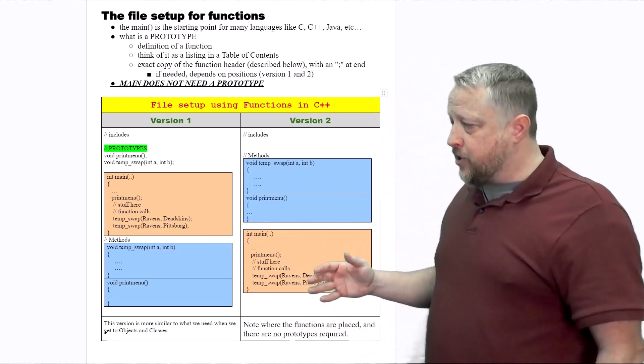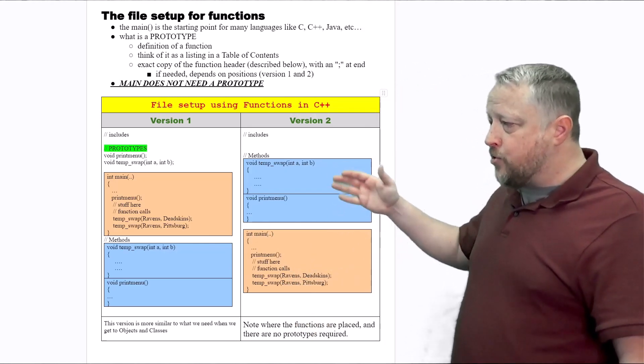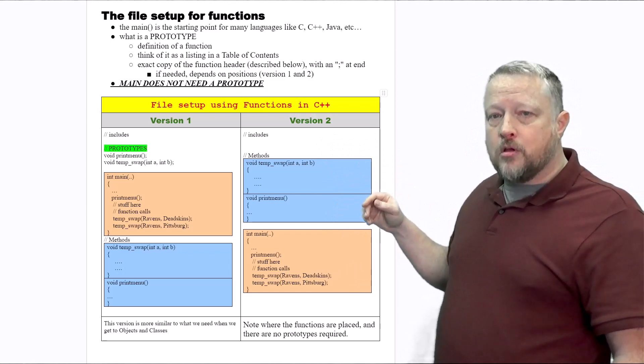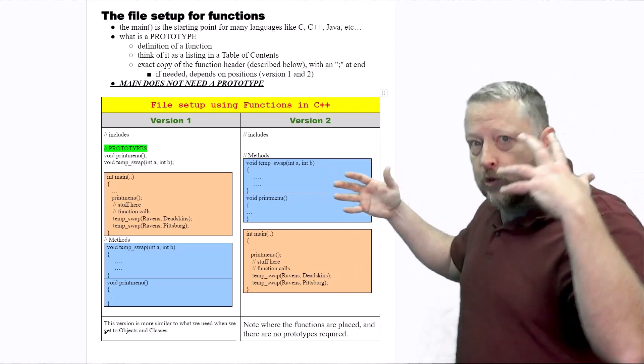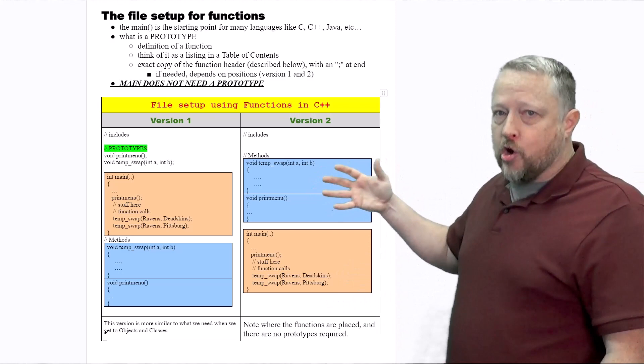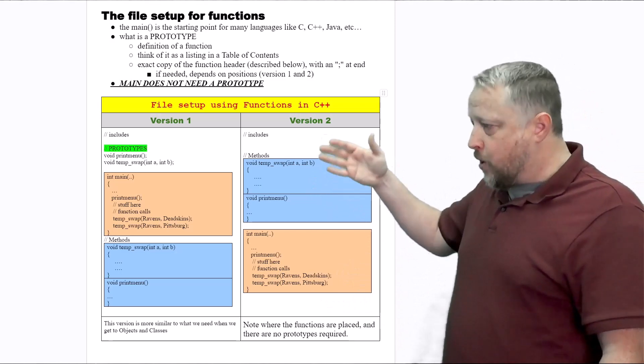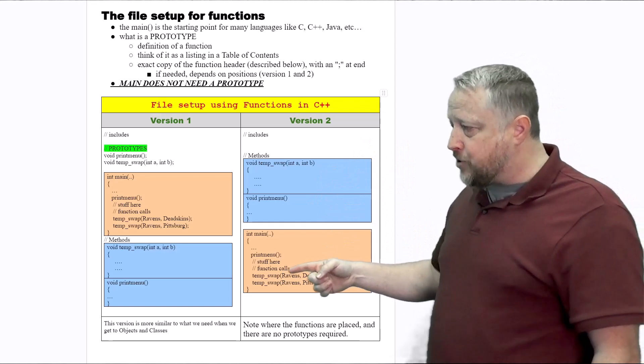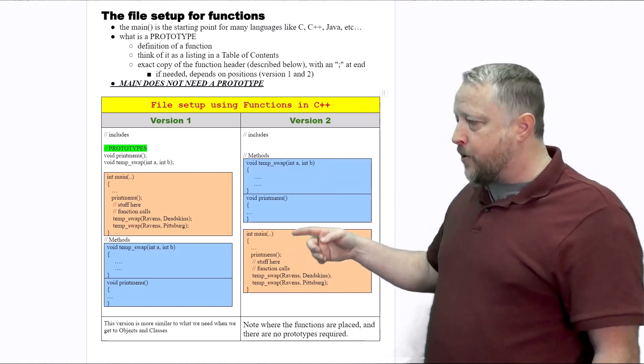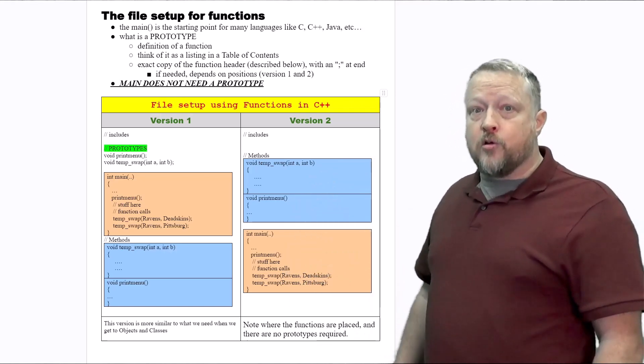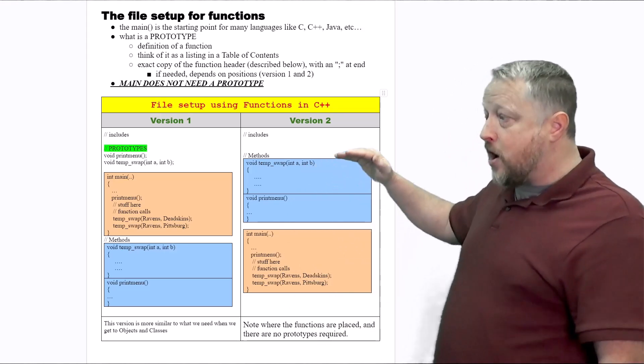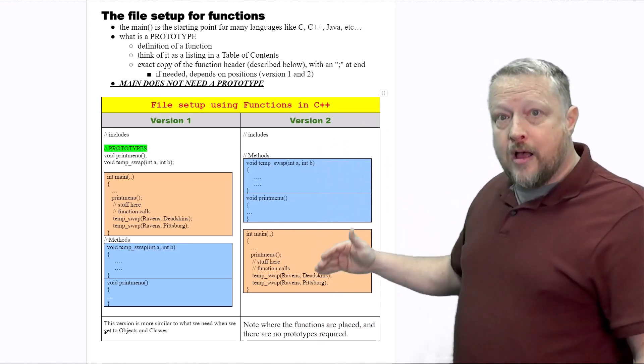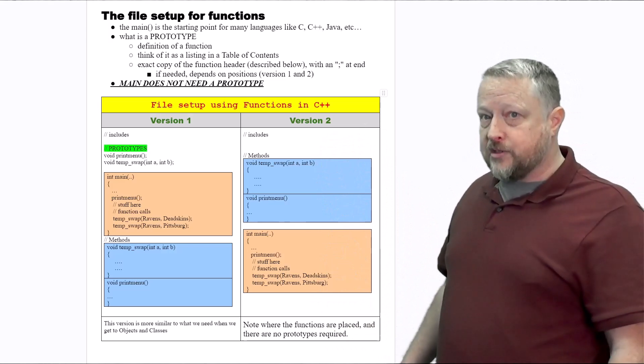Now talking about definition in version number two: notice there's no prototypes at all. In version two, I am spelling out the functions. There's no prototypes because I'm literally spelling it all out. So when main finally gets to temporary swap or print menu, it really knows that it's already been defined because it was defined and created before I got here. And that sounds like a C++ thing, right?